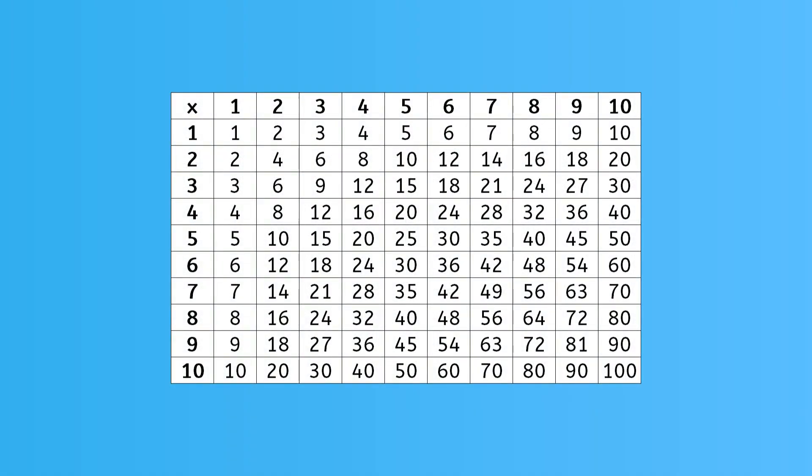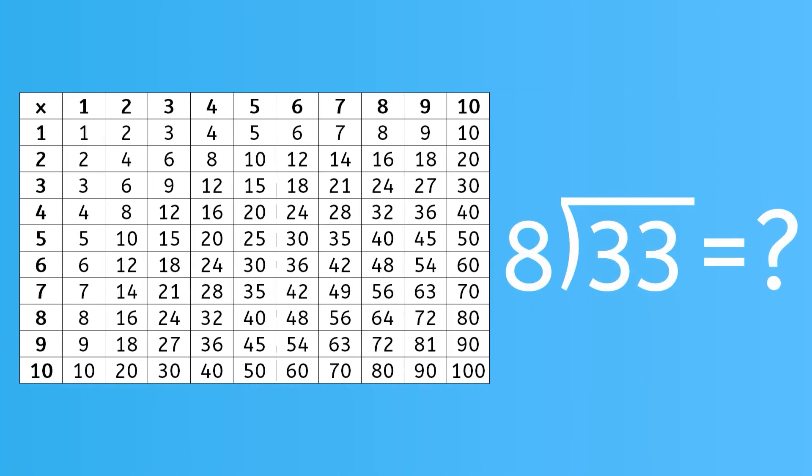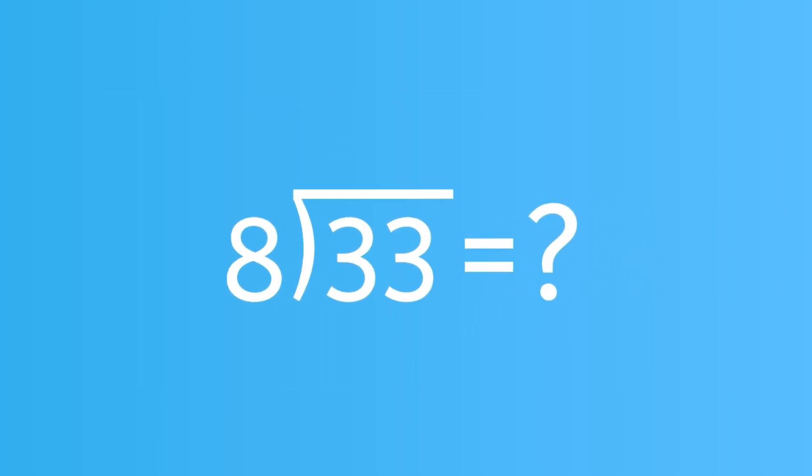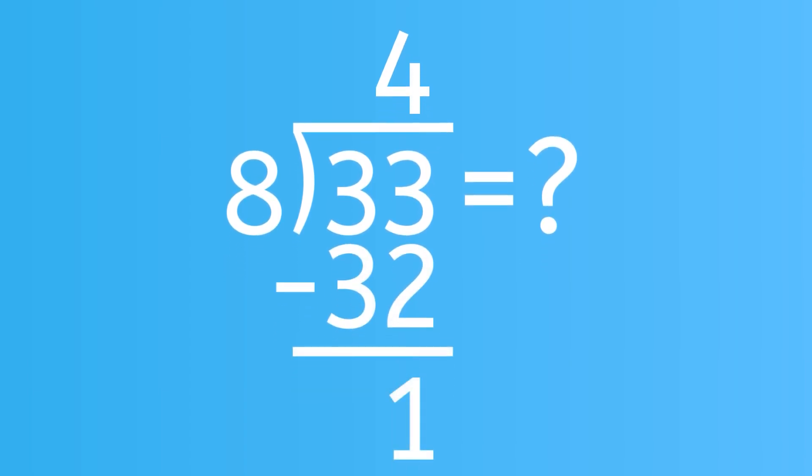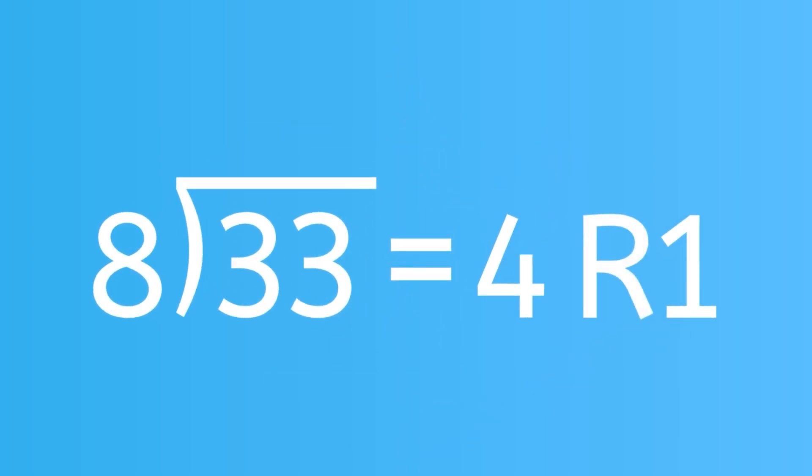When you're unsure about the answer, you might find it helpful to use a multiplication chart. Let's try another problem. What is 33 divided by 8? 8 times 3 is 24, but that leaves 9. What is 8 times 4? 8 times 4 is 32. That's as close as you can get to 33, right? Let's subtract 32 from 33. We have 1 left over. Our answer is 4R1.